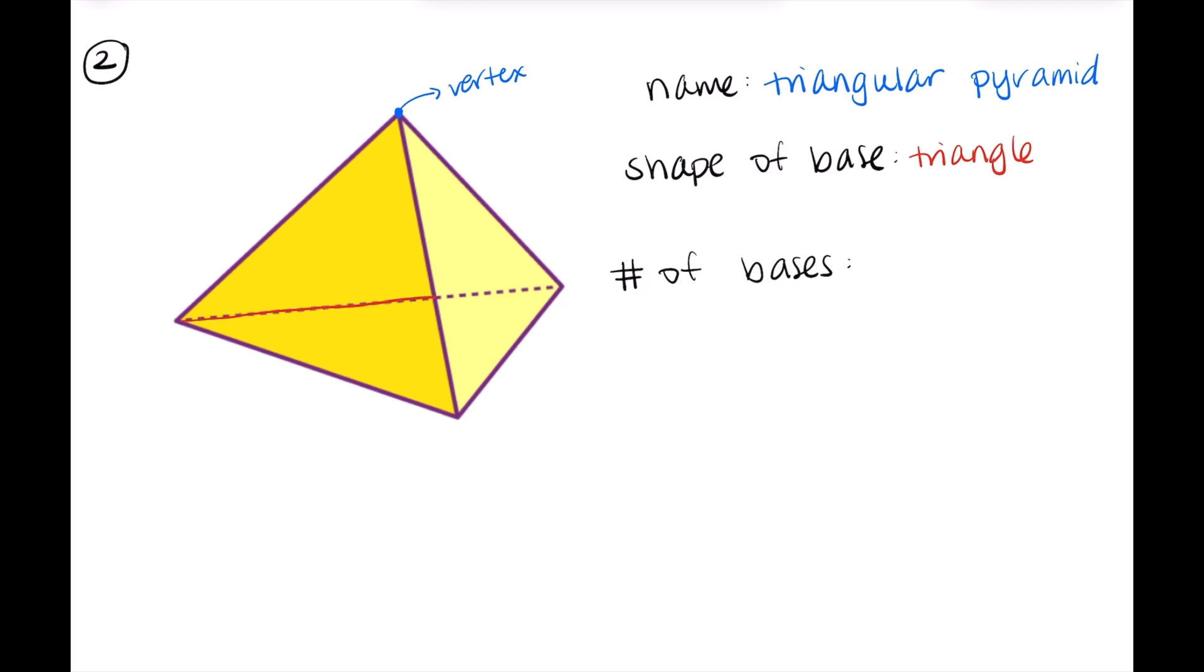Now we'll move on to the shape of the base. I'm outlining it in red. And as you can see here, the shape of the base is a triangle. And now for the last portion of classifying this, it is the number of faces. Excuse the typo here, it should not be bases, it should be faces. And here for our triangular pyramid, we have four faces, right? We have the bottom base, and then we have all three sides. So in total, we have four faces for our triangular pyramid.